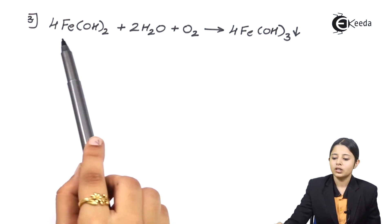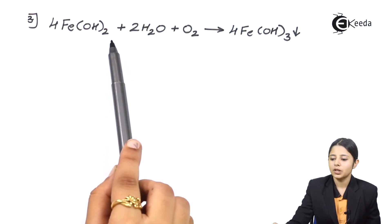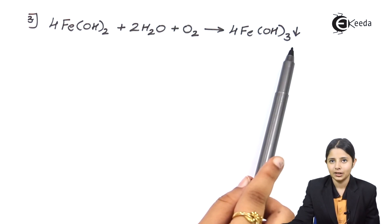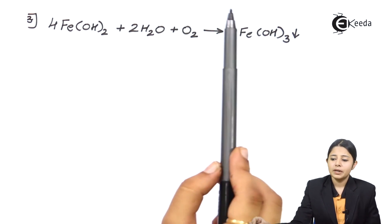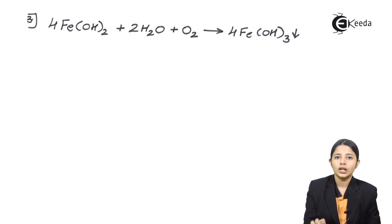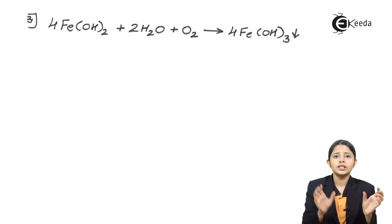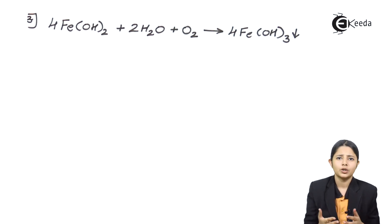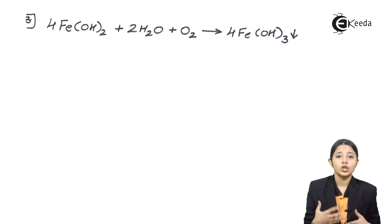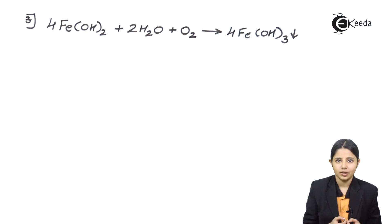The third reaction shows: 4FeO2 + 2H2O + O2 forming 4Fe2O3 as a precipitate. The main product formed is 4Fe2O3, which is a precipitate. So, when a coagulant and a colloidal substance mix together, they firstly form a precipitate and one of its by-products may be a volatile substance, which is an added benefit. This is how coagulation filters out all the colloidal or fine particles from water.